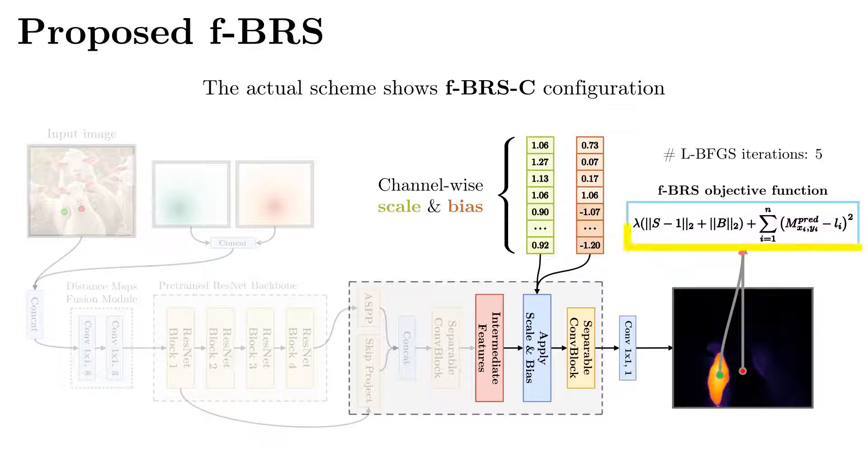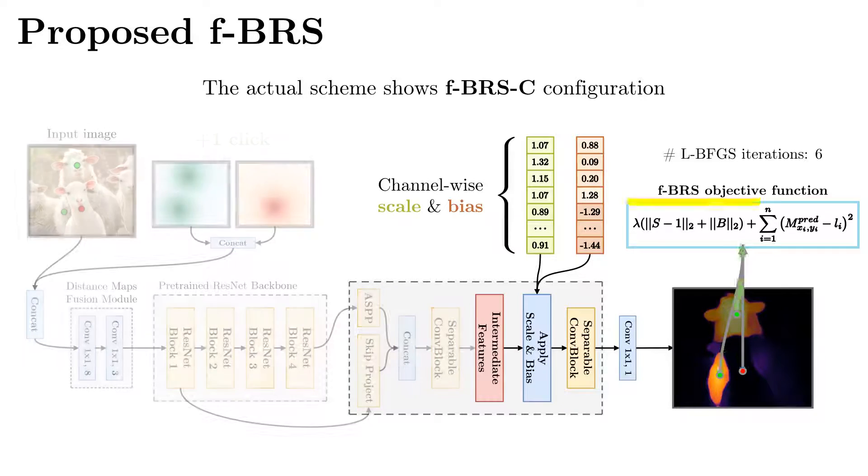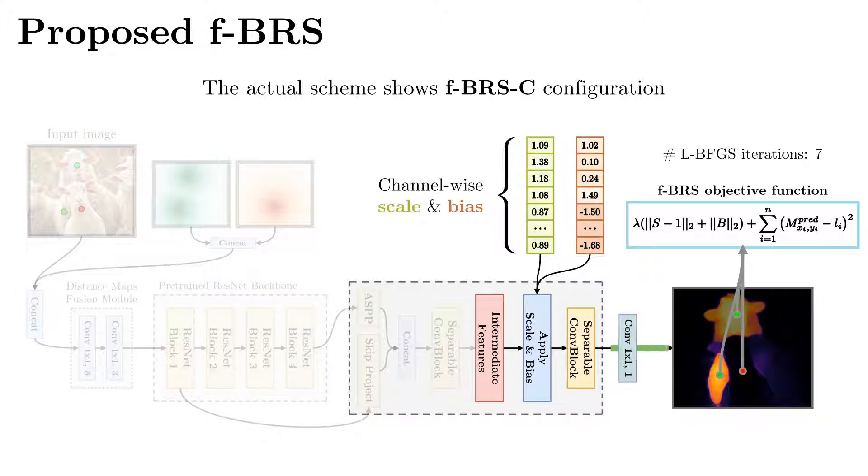In our experiments, we consider only intermediate layer outputs in DeepLab V3 decoder, achieving lower computational cost of backward paths.